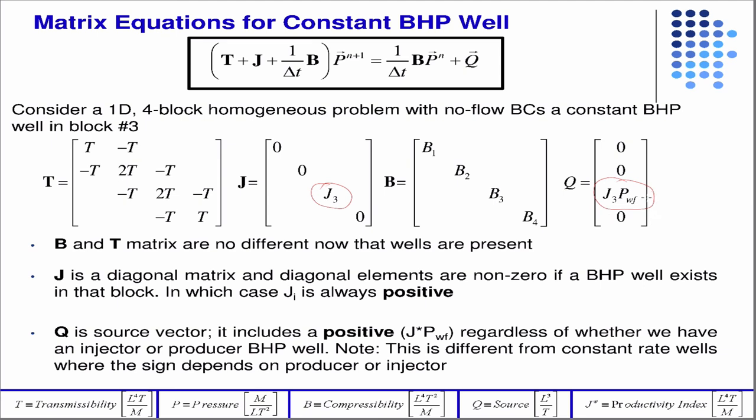My advice would be if this was actually the case, you'd refine. But in the event that you had a constant bottom hole pressure well and a constant rate well in the same grid block, first you fire your reservoir engineer for putting two wells that close to one another. But just in case it actually happened, all you have to do is add in the Q, you just add the terms together. So you'd have the constant bottom hole pressure well plus whatever the Q of the constant rate well was. And really, the better thing to do would be to refine the grid in that region, which would likely force those into separate grid blocks.